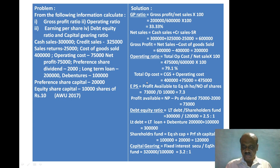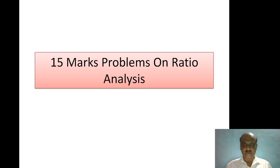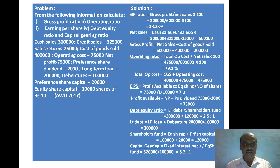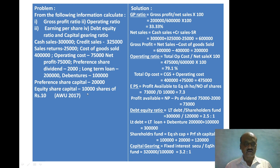Hello students, let us discuss a ratio analysis problem. Calculate gross profit ratio, operating ratio, earning per share ratio, debt equity ratio, and capital gearing ratio. Cash sales: Rs. 3 lakh, credit sales: Rs. 3,25,000, sales returns: Rs. 25,000, cost of goods sold: Rs. 4 lakh, operating cost: Rs. 75,000, net profit: Rs. 75,000, preference dividend: Rs. 2,000, long-term loans: Rs. 2 lakh, debentures: Rs. 1 lakh, preference share capital: Rs. 20,000, equity share capital: 10,000 shares of Rs. 10 each.